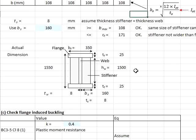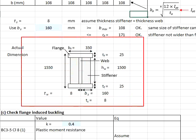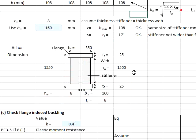Finally, as a conclusion of the estimations: The web height will be 1.5 meters. The web thickness is considered as 8mm. The flange width is 350mm and the thickness is 25mm. As for the stiffener, 8mm thickness and the b here referring to 160mm.